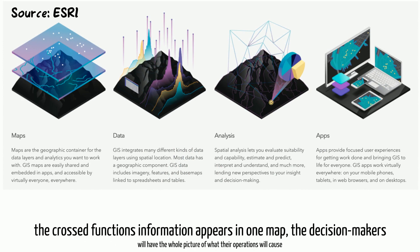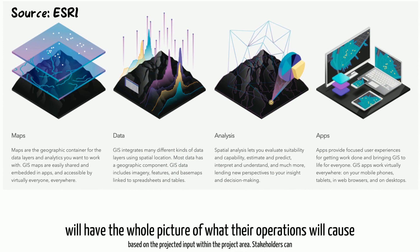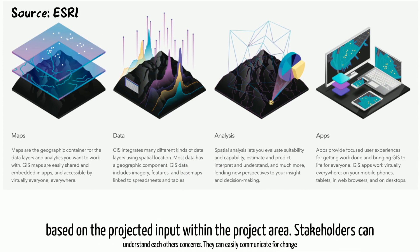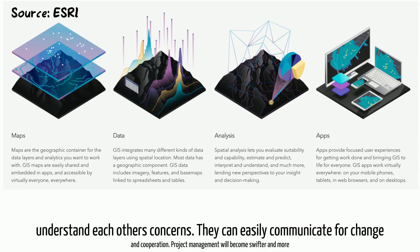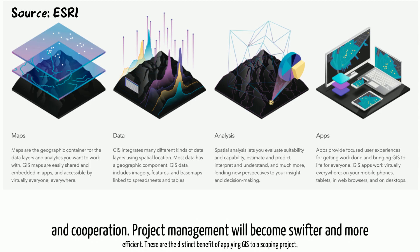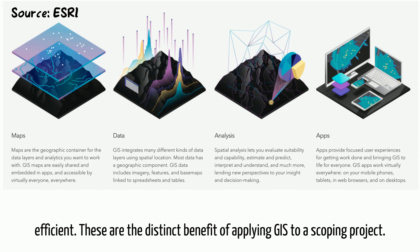When cross-functional information appears in one map, decision makers will have the whole picture of what their operations will cause based on the projected input within the project area. Stakeholders can understand each other's concerns and easily communicate for change and cooperation. Project management will become swifter and more efficient. These are the distinct benefits of applying GIS to a scoping project.